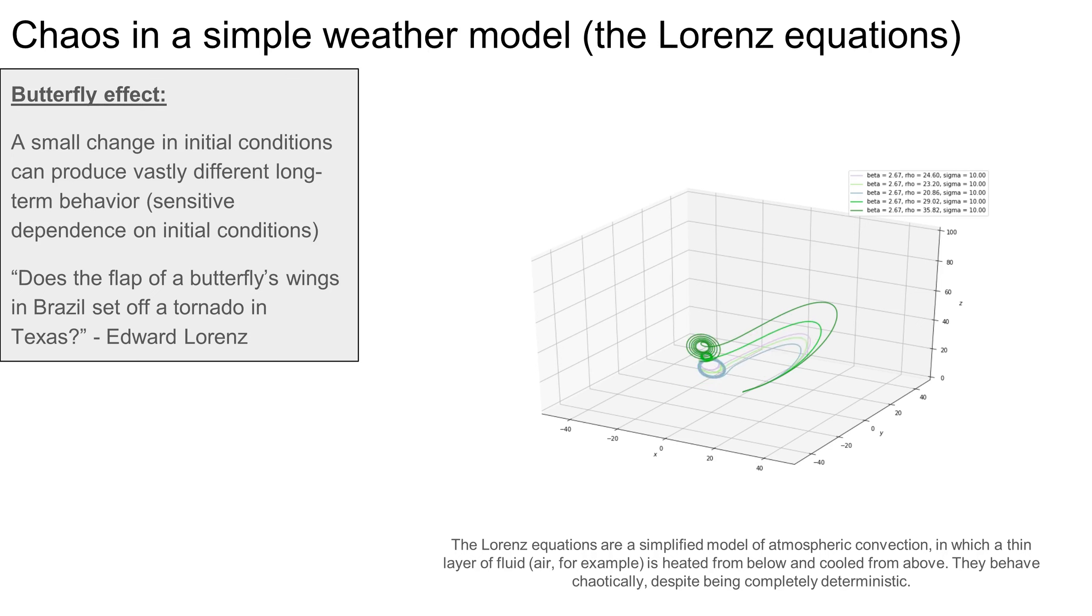This model produces trajectories that eventually orbit chaotically around a strange attractor, which, coincidentally, looks kind of like the wings of a butterfly. In case you want to experiment with Lorenz's model, the code for reproducing this animation is available on GitHub.